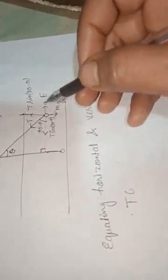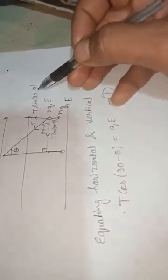Now equating horizontal and vertical components: for horizontal equilibrium, T·cos(90−θ) = QE, since the horizontal component of tension is opposite in direction to QE. For vertical equilibrium, T·sin(90−θ) = Mg.